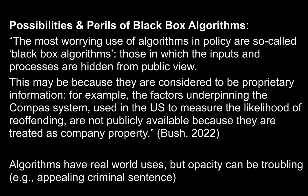There are various possibilities and perils of black box algorithms. The most worrying use of algorithms in policy are so-called black box algorithms — those where the inputs and processes are hidden from public view. This may be because they are considered to be proprietary information. For example, the factors underpinning the COMPASS system used in the U.S. to measure the likelihood of re-offending for prisoners are not publicly available because they are treated as company property. Algorithms can have real-world uses, like helping judges see who is at higher risk of offending, but the opacity of these black box algorithms can be troubling. For example, how do you appeal a criminal sentence if it's partially decided by an AI?